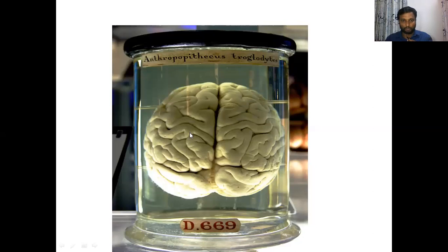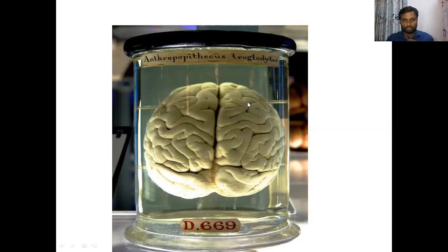The cerebrum has two cerebral hemispheres. Here in the specimen we can see — this is a posterior view of the cerebrum. We can see two cerebral hemispheres: this is one cerebral hemisphere and this is the opposite one. These two are connected by the corpus callosum, which is not very clear on this specimen.